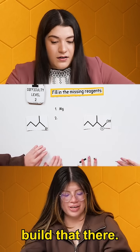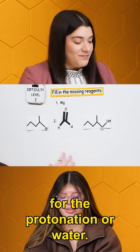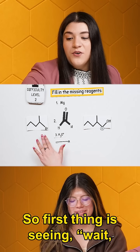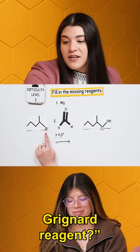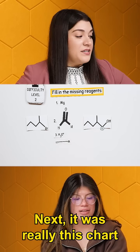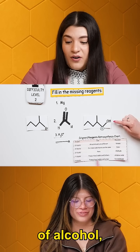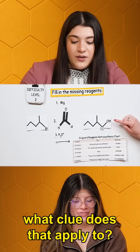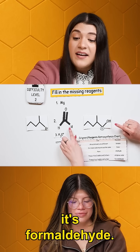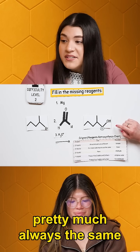So I'm going to have you build that there. And then what's our last step? Now we have the acid for the protonation, or water. Perfect, and that's it. So first thing is seeing, wait, do we have our Grignard reagent? If the answer is no, then we form it — that's our first step. Next, it was really this chart that is going to save you here: identifying the type of alcohol, then seeing what clue does that apply to, how many carbons did I add? And going from there — so that told me it's formaldehyde, that's the carbonyl that I'm using here. And then the last step is pretty much always the same.